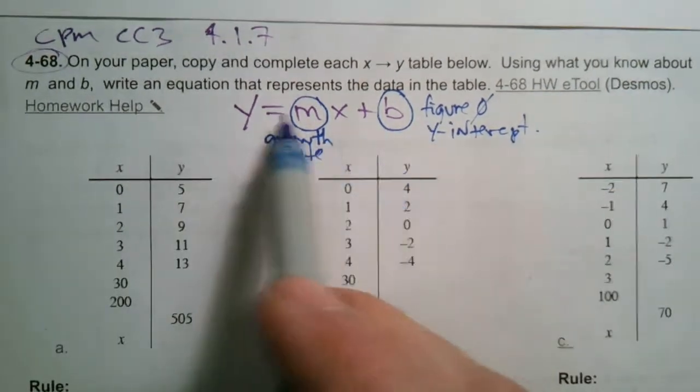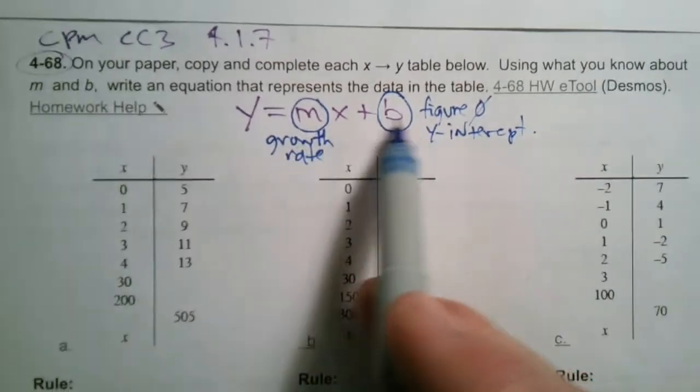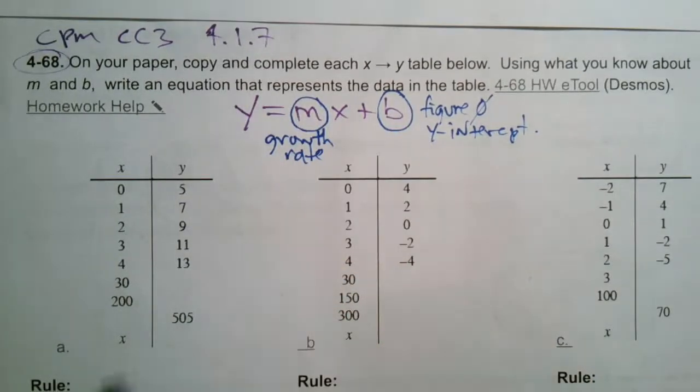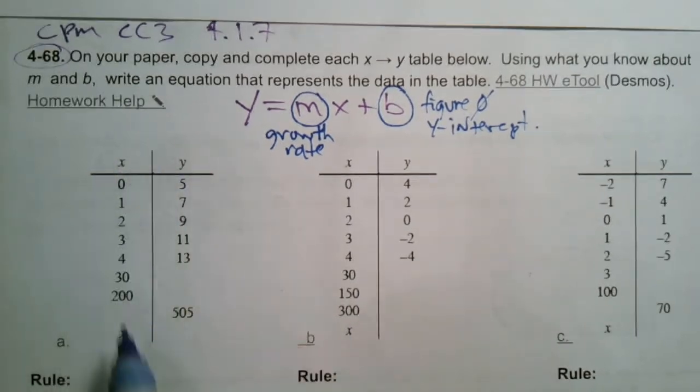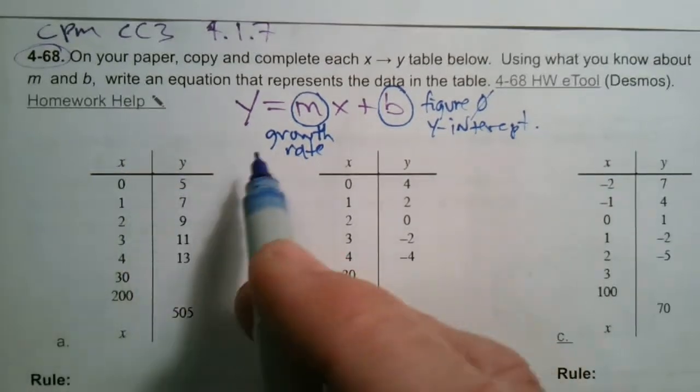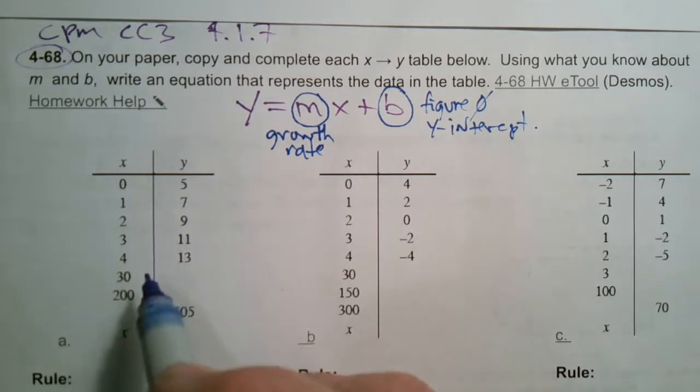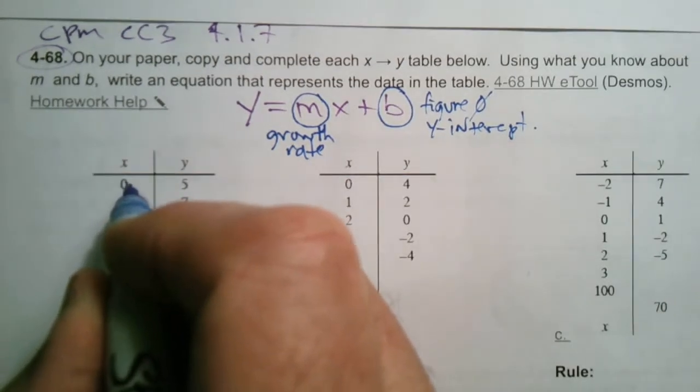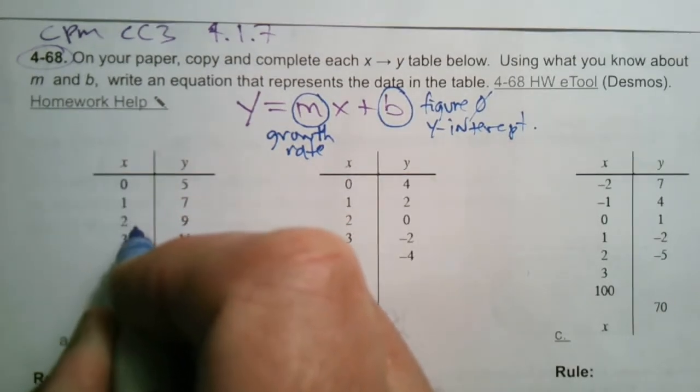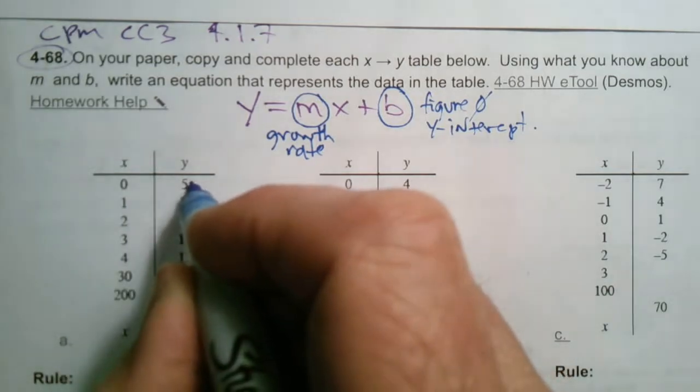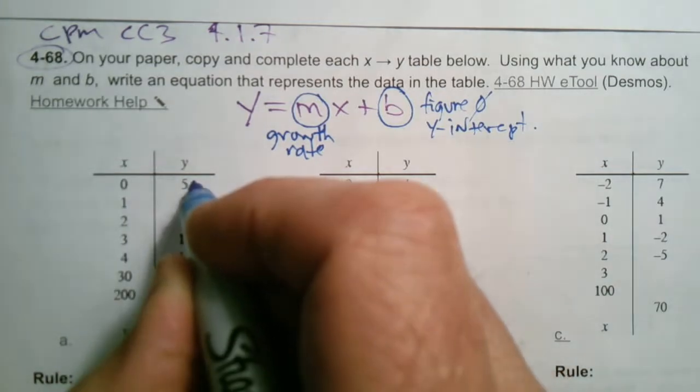So if I look at my table, I just got to find those two numbers that go in this equation, and then I can have that rule. So if I look at a, first of all, let's figure out what the m is. The m is the growth rate. So if I'm figuring out from here to here, it's growing by one. So that would be consistent if I can do it from here to here.